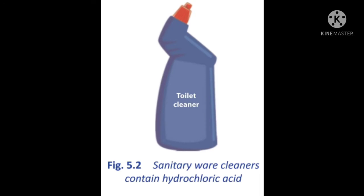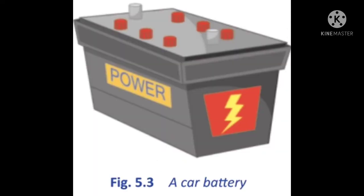About uses of acids: dilute hydrochloric acid is used in various industries with heating applications — it is applied to remove deposits from inside boilers. Hydrochloric acid is also used for cleaning sinks and sanitary baths. Sulfuric acid is called the king of chemicals, and its major uses include car batteries, paints, drugs, and dyes, and to produce fertilizers.